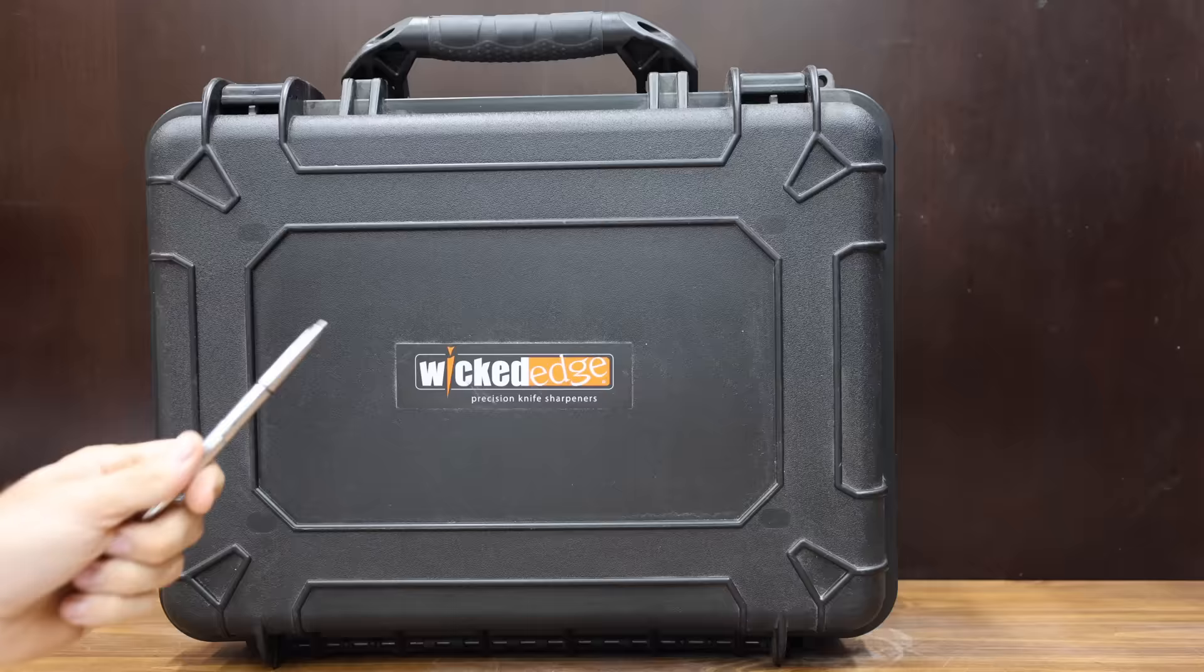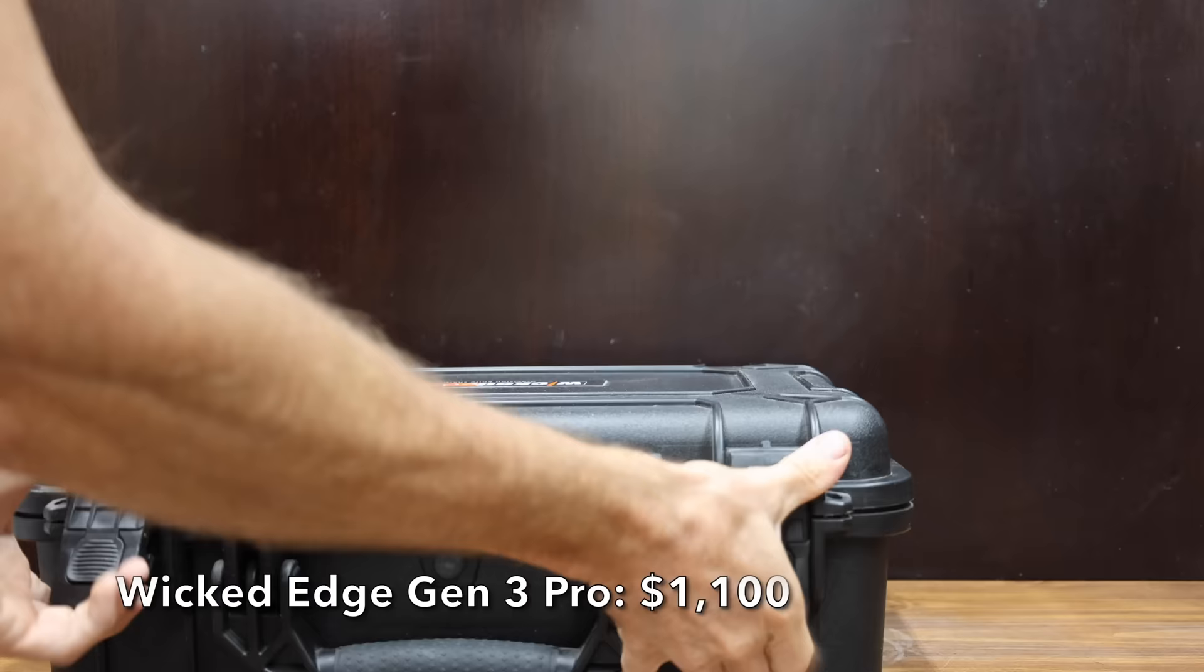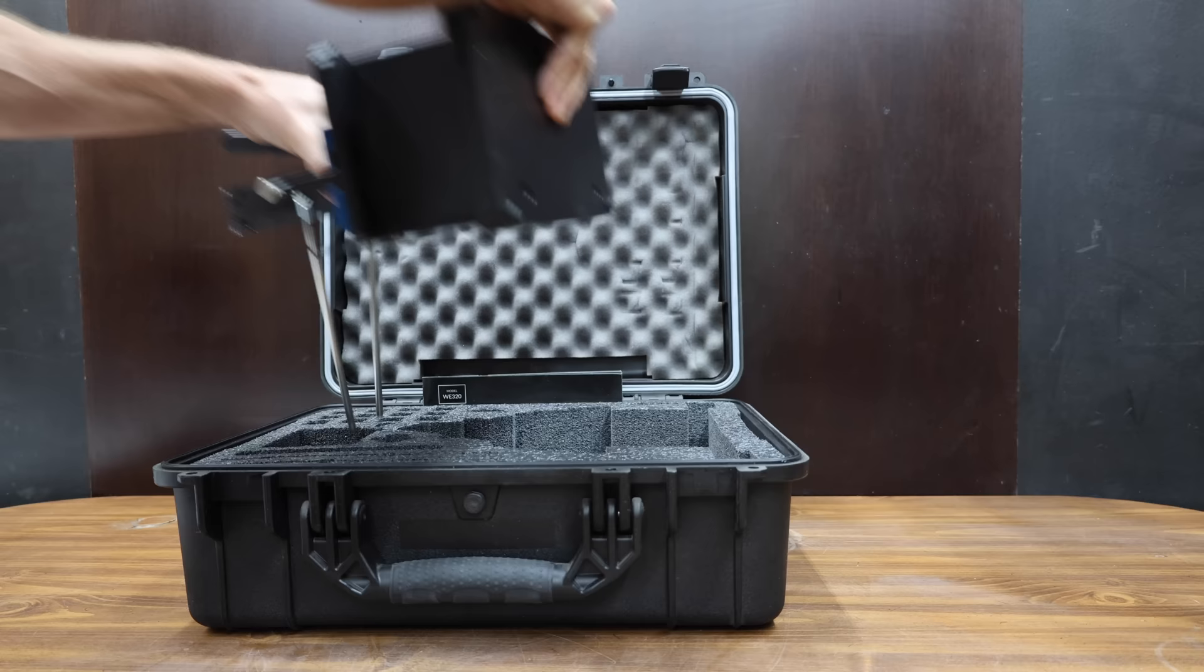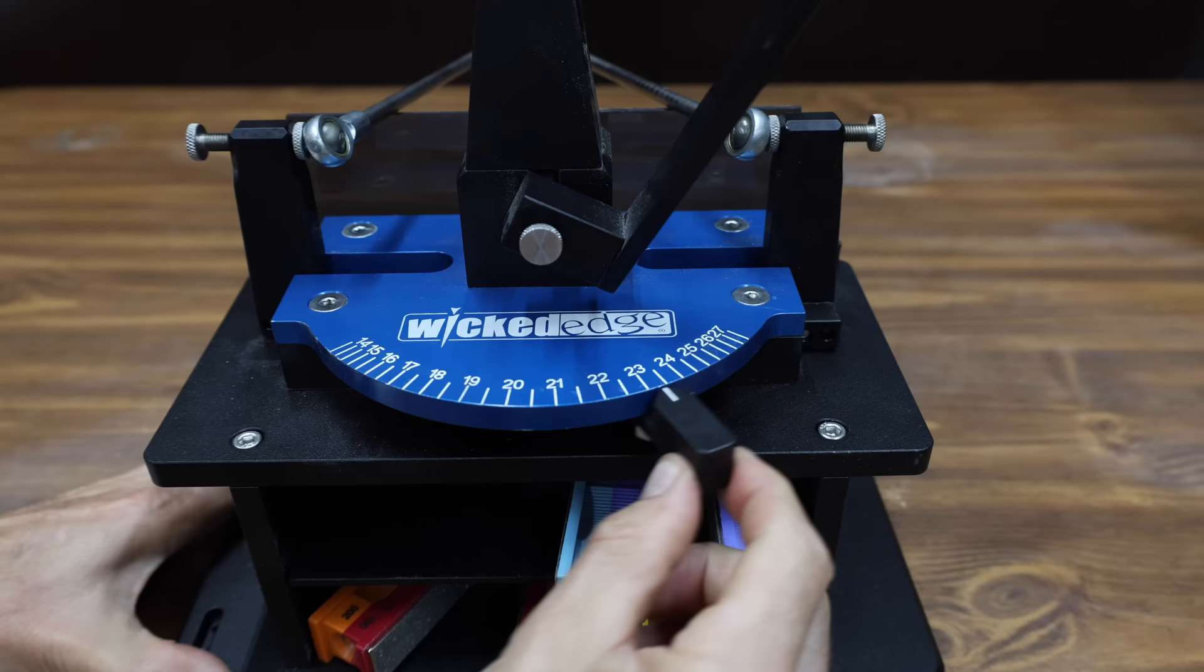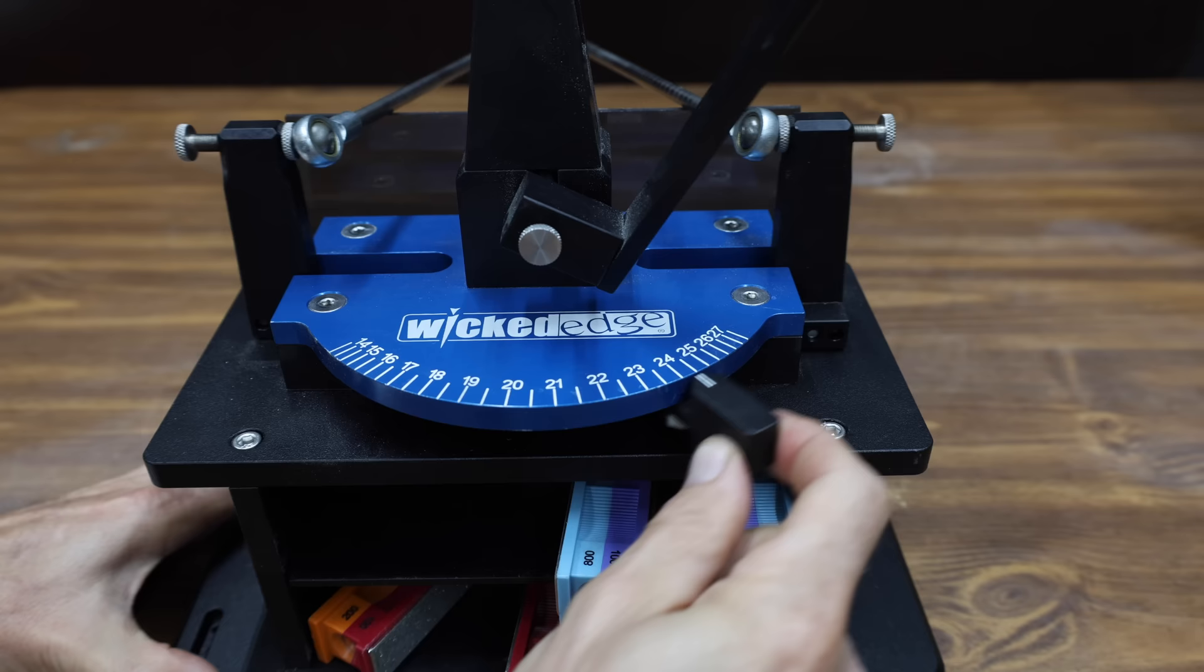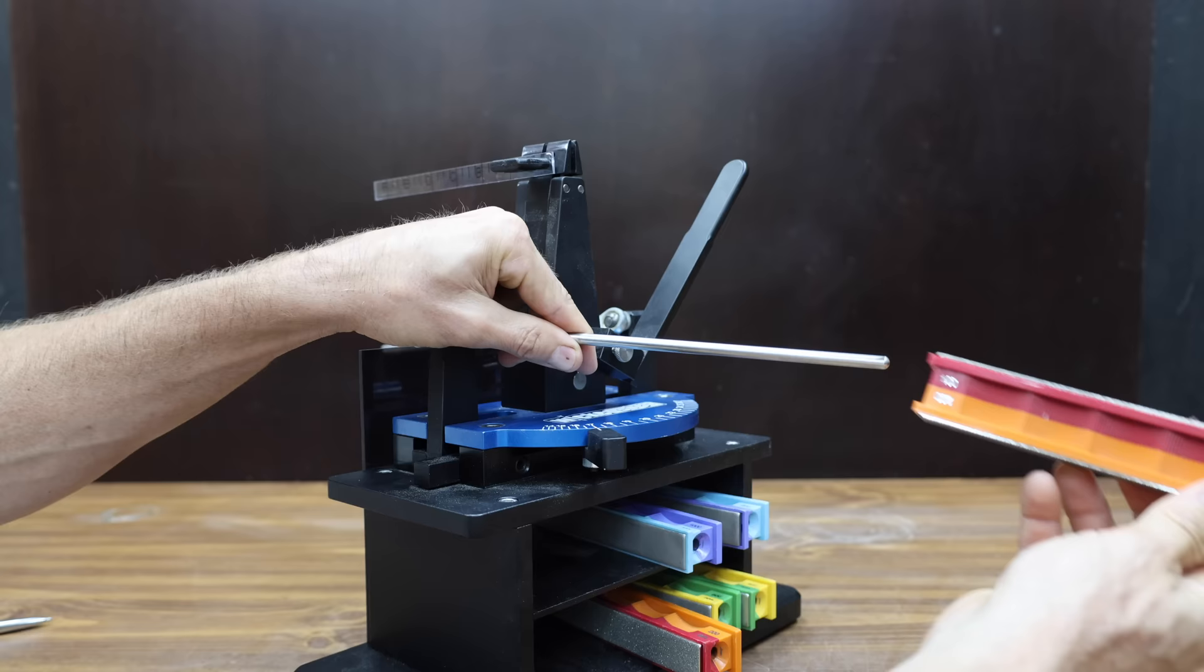I previously tested this sharpener and decided to throw it in the showdown again since it performed very well. The Wicked Edge comes inside of a very nice carrying case. You can easily adjust the sharpening angle by adjusting this lever. Includes half degree increments and micro angle adjustment of 0.05. We'll set the sharpener to 17 degrees. The Wicked Edge is made in USA.